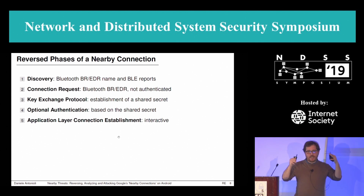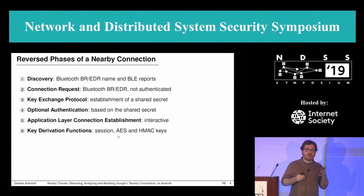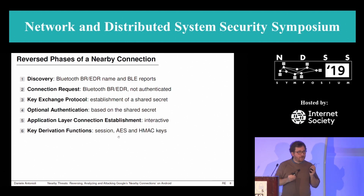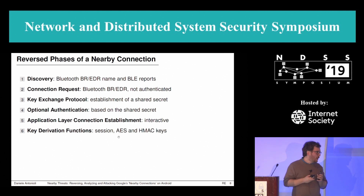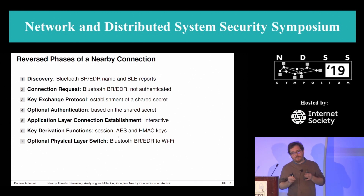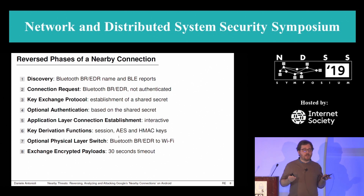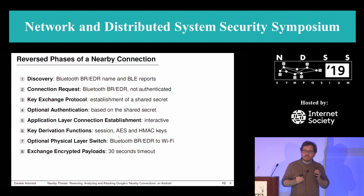Both client and server must accept the connection. Once the application layer connection is established, a set of key derivation functions are run by both devices to compute session keys: AES keys for confidentiality and HMAC keys for message integrity, both based on the shared secret from the key exchange. Then there is an optional physical layer switch phase — so far only Bluetooth is used, but at this point client and server may decide to switch to Wi-Fi. Finally, the client and server can exchange payload at the application layer, which uses a keep-alive mechanism based on a 30-second timeout.